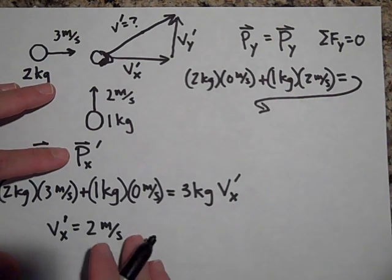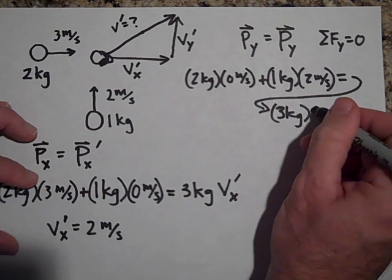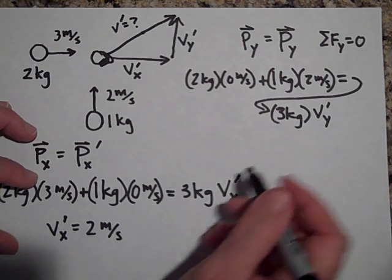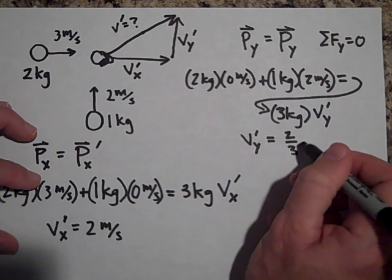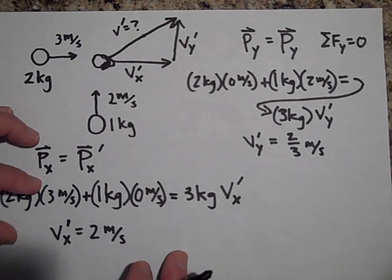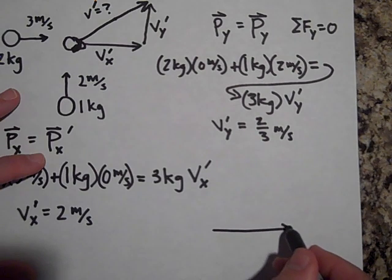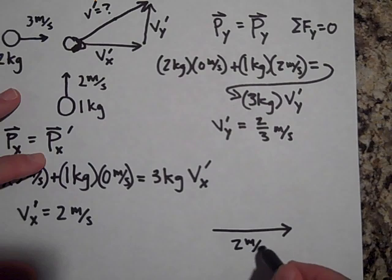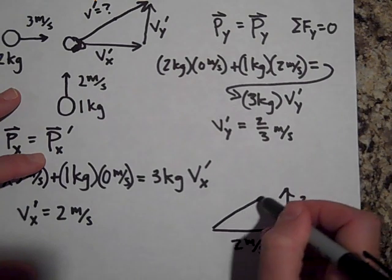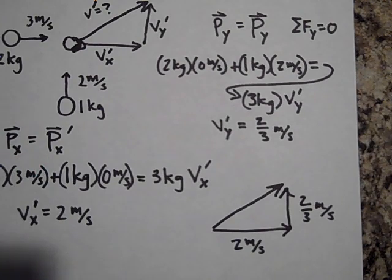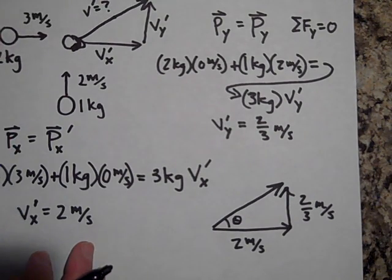That equals three kilograms times vy prime. Solving for vy prime gives two-thirds meters per second, positive. So the final velocity has two meters per second in the x-direction and two-thirds meters per second in the y-direction. To get the magnitude you'd use the Pythagorean theorem, and you can get the direction using tangent or your favorite trig function.